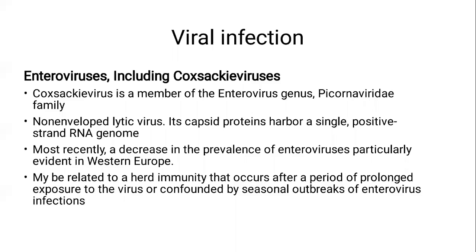Enterovirus, including Coxsackievirus, was the most common etiology of viral myocarditis in the 1980s and 1960s. Coxsackievirus is a member of Enterovirus that belongs to the Picornaviridae family. It is an unenveloped, single positive-stranded RNA virus. Recently, there is a decrease in the prevalence of Enterovirus, particularly in Western Europe. This may be due to development of herd immunity or confounding by seasonal outbreaks.